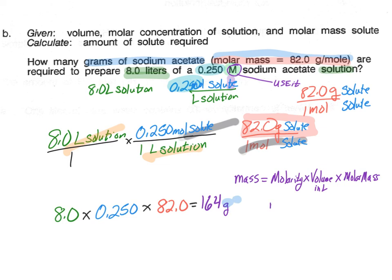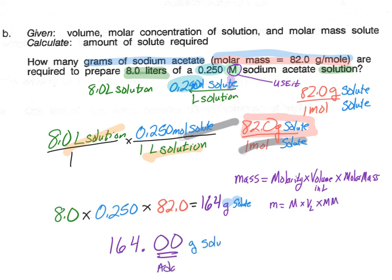For online homework, exams, and quizzes, write to two decimal places as directed. So the final answer would be written as 164.00 grams of sodium acetate.